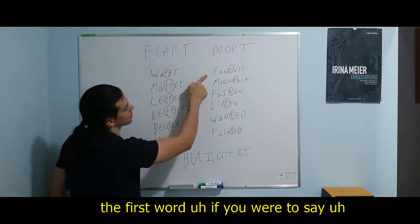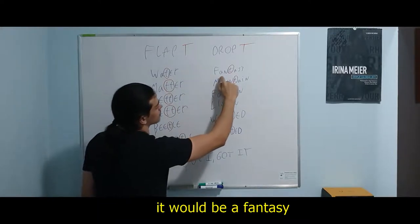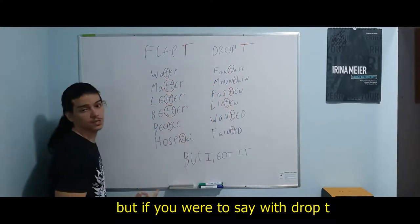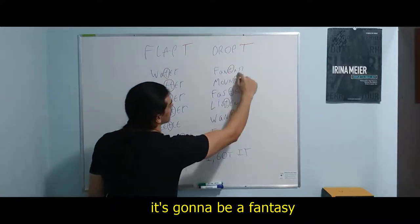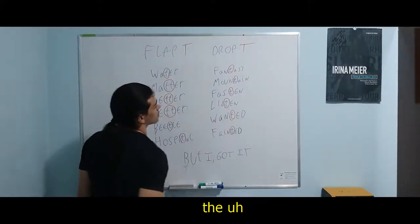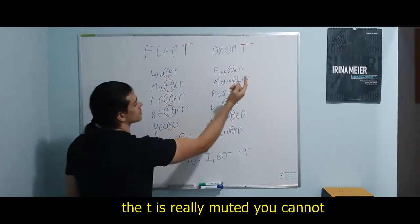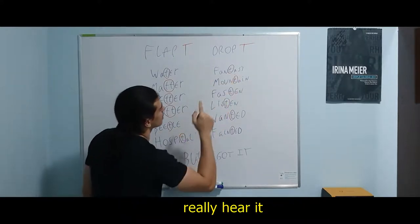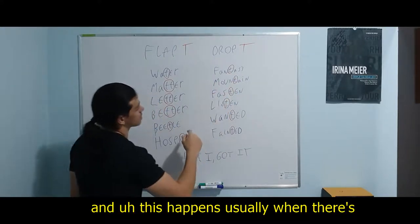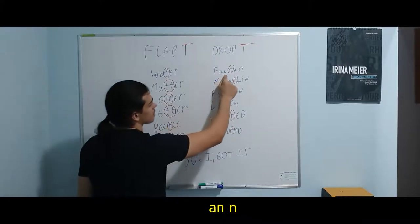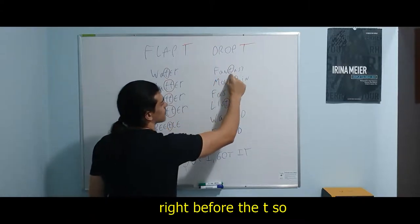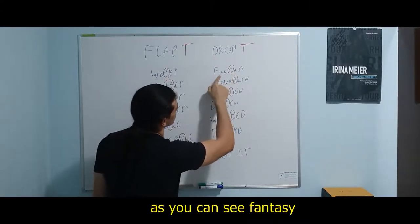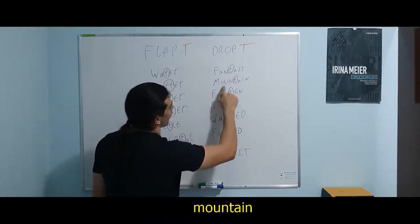it would be 'fantasy,' but if you were to say it with the drop T, it's going to be 'fantasy' — the T is really muted, you cannot really hear it. And this happens usually when there's an N right before the T, as you can see: fantasy, mountain.